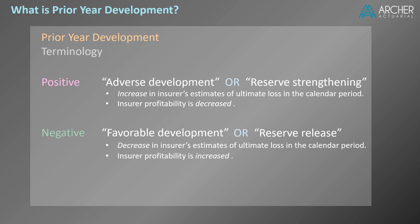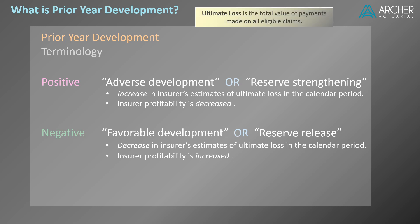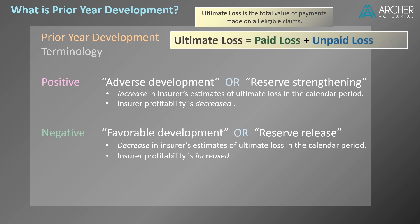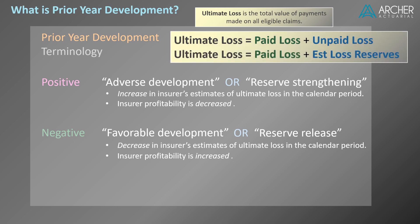Let's look at another definition for ultimate loss. Previously, we defined ultimate loss as the total value of payments made on all eligible claims. Ultimate loss can also be defined as the sum of paid loss and unpaid loss. Insurers are required to carry a reserve provision for unpaid loss — we call that a loss reserve. So another way to look at ultimate loss is the sum of paid loss and estimated loss reserves. Let's return to our example and see how all the pieces relate.